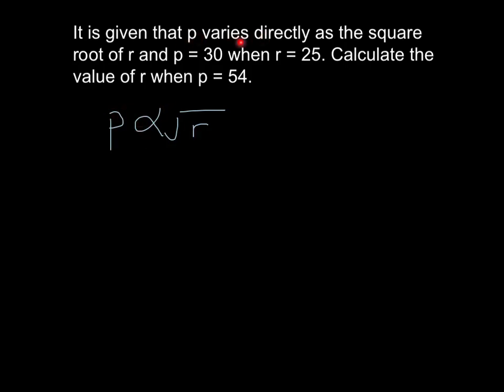If this question you change to P varies inversely, you just change to 1 over square root of R. I think it's not really hard. So first step is still the same. I make this symbol become equal and then I add a constant beside square root of R. So this is very important. If you got this one, I think you can get one mark from your exam.